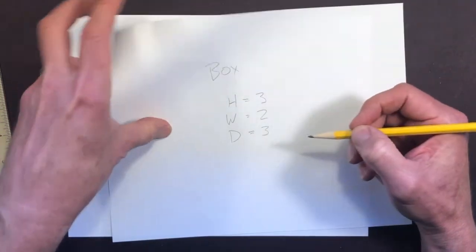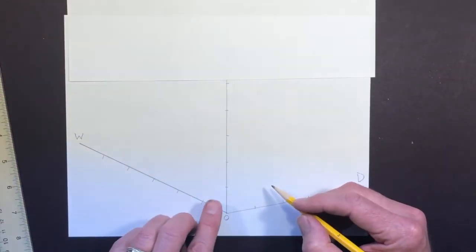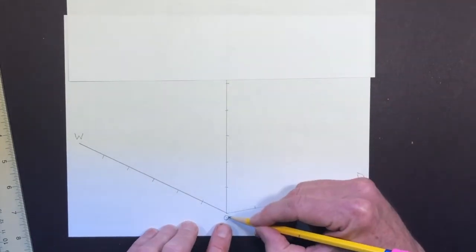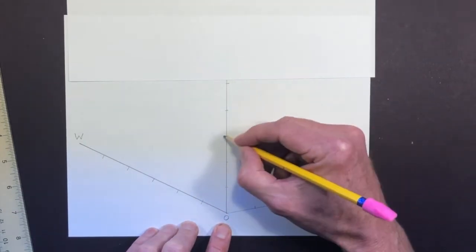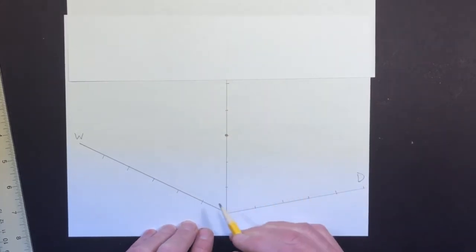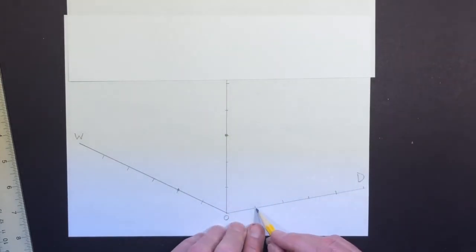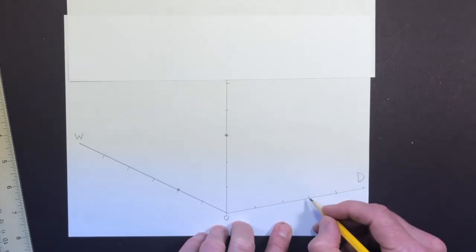So taking these dimensions, I'm going to transfer them here. I'm going to have a height of three. So zero, one, two, three. I'm going to make a dot right there. And a width of two. So I'm going to come here and make a dot. A two and a depth of three. So I'm going to come over here. One, two, three. And make a dot.